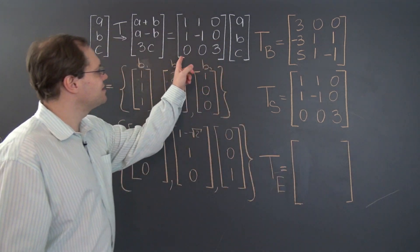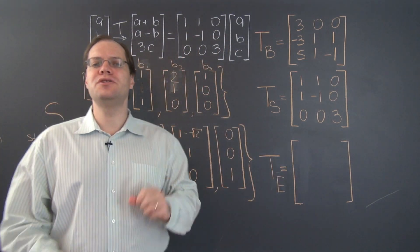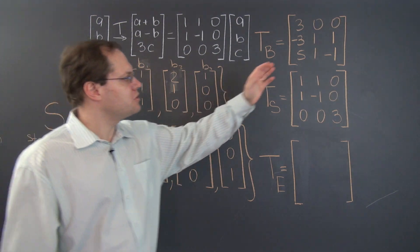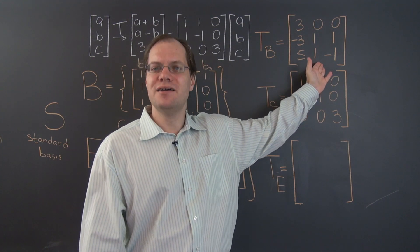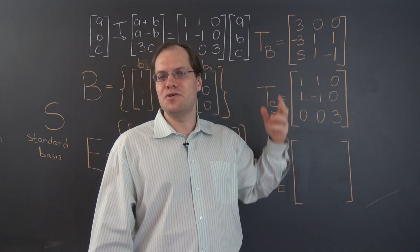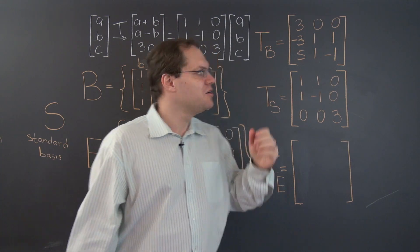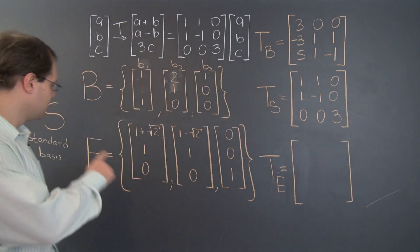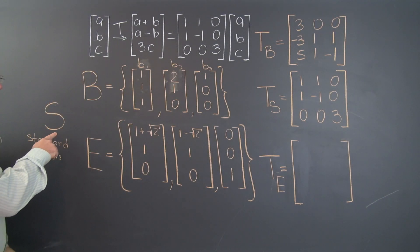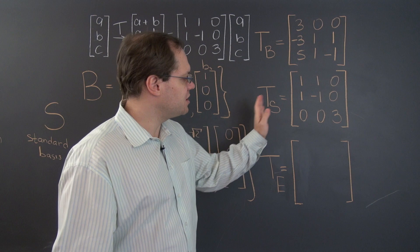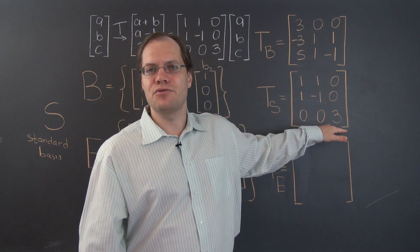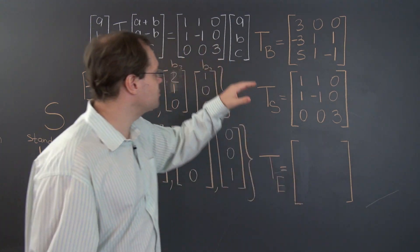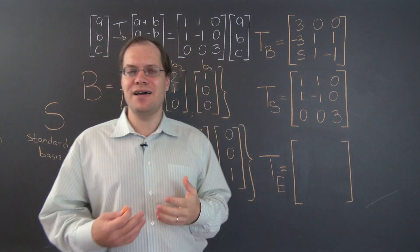So far, we have analyzed this linear transformation with respect to two different bases. Our first choice was rather arbitrary, and from that choice we learned that the matrix representing the linear transformation in the component space with respect to some arbitrary basis will be different from the matrix that defines it. The next basis we considered was the standard basis, and we learned it's the one special basis for which the matrix representing the linear transformation in the component space is actually the same matrix as the matrix that defines the linear transformation.